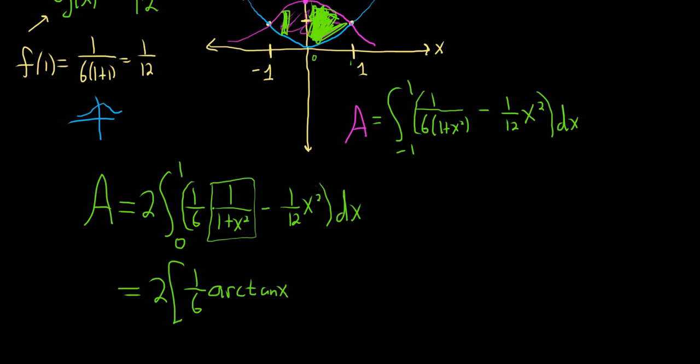And then here we can just use the power rule. So it's going to be x to the 3 over 3. But then you multiply 3 times 12. So that's going to be 36 x cubed. Beautiful.